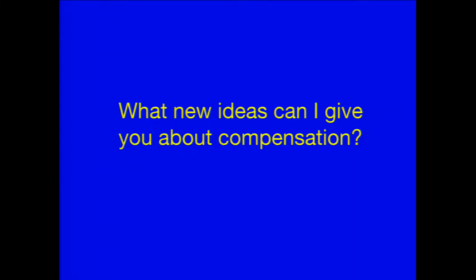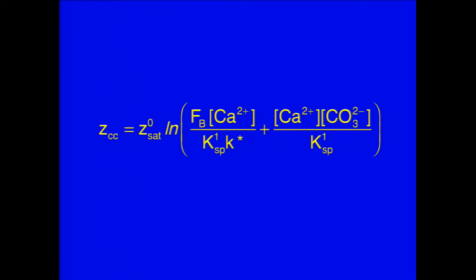Now let me tell you about something new, because everyone should have known the previous material from introductory courses. Let's go back to this formula. The way the results I showed you work is by varying the carbonate ion term — this changes because I'm acidifying the oceans. But people have neglected something very simple, at least until very recently: what if I change the calcification and, therefore, the rain rate of calcium carbonate to the oceans?